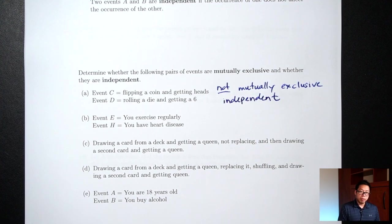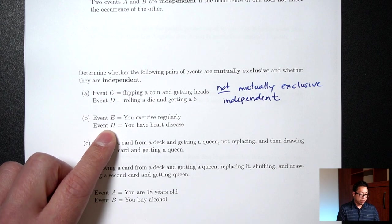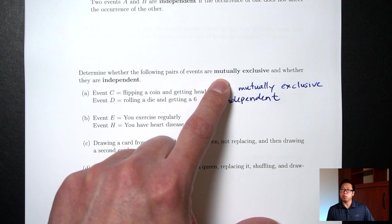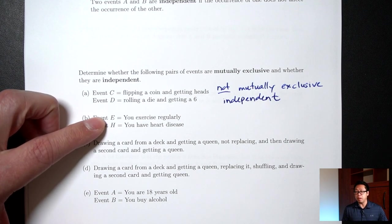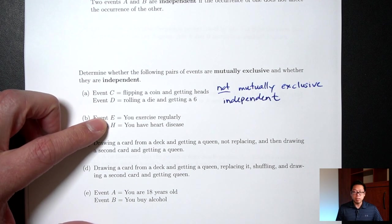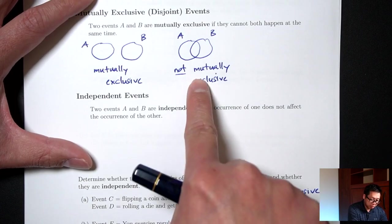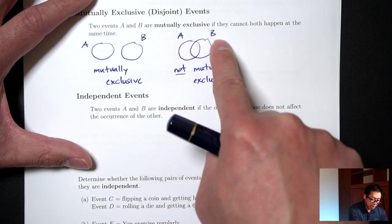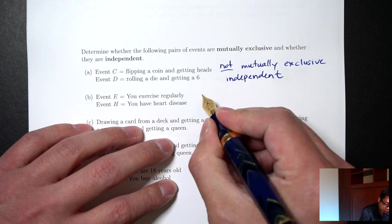Part B: Event E is you exercise regularly. Event H is you have heart disease. First, are these mutually exclusive? Can you exercise regularly and at the same time have heart disease? Yes, it's possible. So since they can both happen at the same time — there's an overlap — this will be not mutually exclusive.